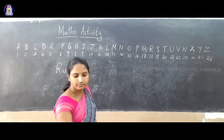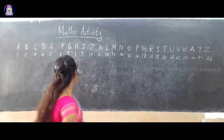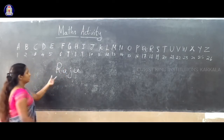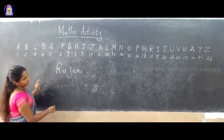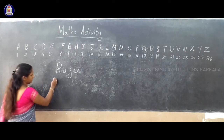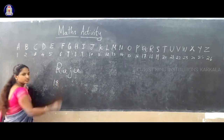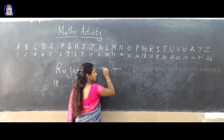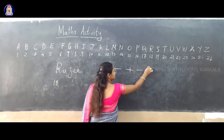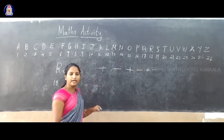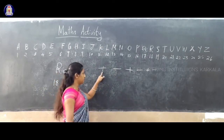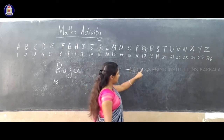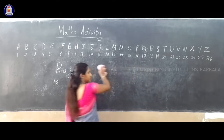So now the rule is: you can consider plus sign, minus, plus, minus, plus, minus — like this. First letter is plus, second letter is minus, third is plus, fourth is minus — like this, you can write.